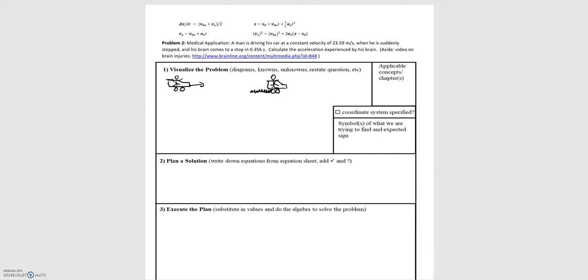A man is driving his car at a constant velocity of 23.59 meters per second. So we're gonna highlight that part.